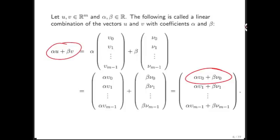Taking this linear combination of vectors u and v using the coefficients alpha and beta means that we take the same linear combination of each of the components of u and v.